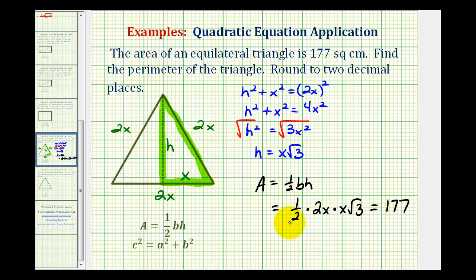So now we're going to take this equation and solve for x. The first thing we should notice is that this 2 and this 2 simplify out. So it simplifies to the equation x squared times square root 3 equals 177.